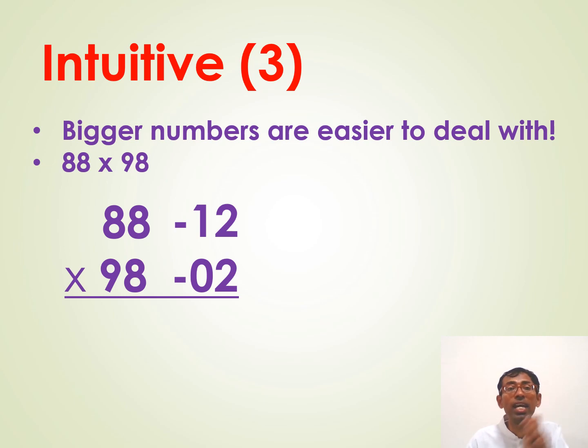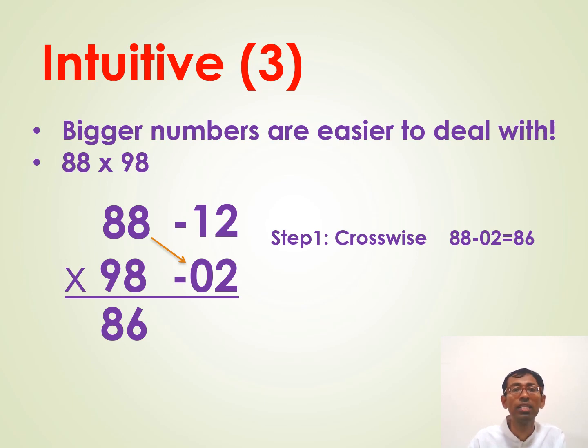For example, you see, eighty-eight is twelve away from hundred. It is below hundred. So, we write it a minus twelve beside. Ninety-eight is two away from hundred. It's two below hundred. So, we put a minus two here. And, that's it. You get the answer right away. The first part of the answer is simply do the crosswise calculation. Eighty-eight minus two. Or, you can also do this way. Ninety-eight minus twelve. The answer is eighty-six. And, the second part of the answer is simply multiply minus twelve and minus two. That is twelve times two is twenty-four.